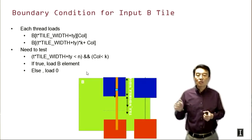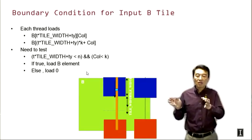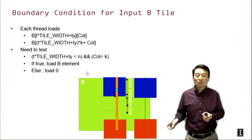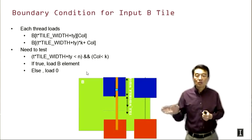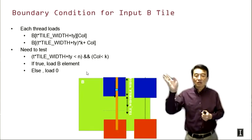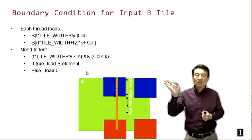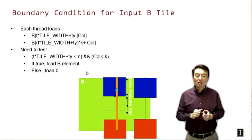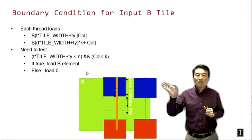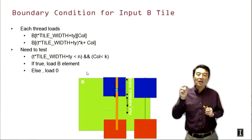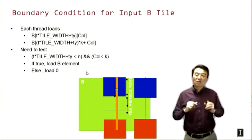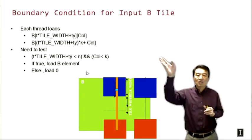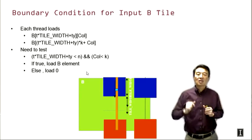We have a fairly similar situation for B. The B strip goes from top to bottom. Most of the tiles are going to be totally within the valid range until the very end, where we need to test whether we hit the end in the y-dimension. We also have a situation where one of the strips is going to be at the right boundary of B, so we need to make sure threads always test whether the x-index is within range. We only load the elements when both y and x-index are within valid range. The calculation is exactly the same as A, except that the expressions for the y-index and x-index are different for B.